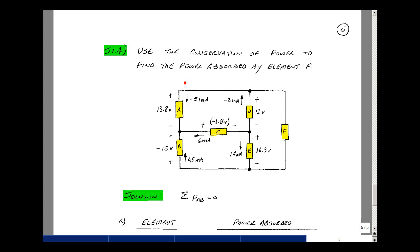Power absorbed is current entering the plus terminal, leaving the minus terminal. So the power absorbed by this element is 13.8 volts times minus 51 milliamps, and that would be minus 703.8 milliwatts.